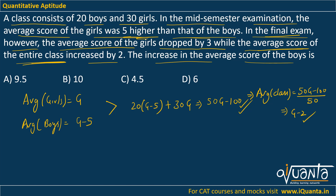Now when we come to the final exam, the average score of girls dropped by 3. So in the final exam, girls have average marks of g-3. The average of the entire class increased by 2. During the mid-semester examination the average of the whole class was g-2, and if we increase it by 2, we get g. So during the final exam the average of the whole class is g.